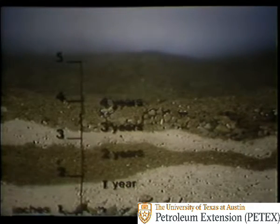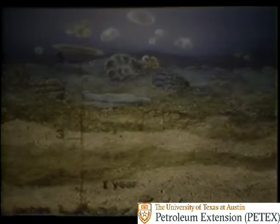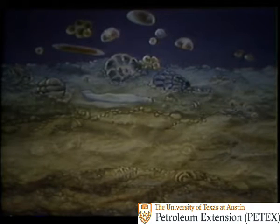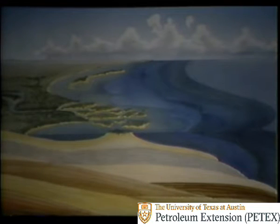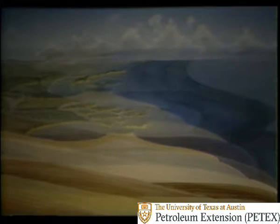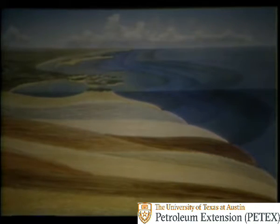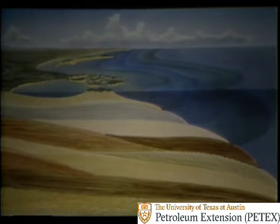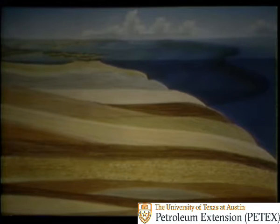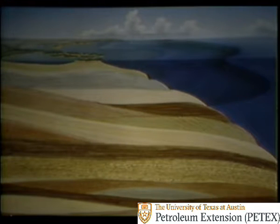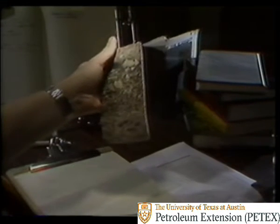At the same time, tiny marine organisms die and collect on the ocean floor. Gradually, almost imperceptibly, this sediment builds up until, after millions of years, layers thousands of feet thick form. Each layer presses down on top of others, compacting the sediment and compressing the organic material between the grains. Eventually, the bottom-most sediments turn to rock — sedimentary rock.